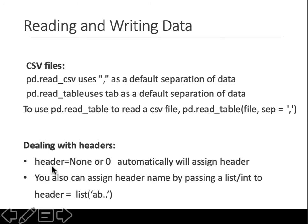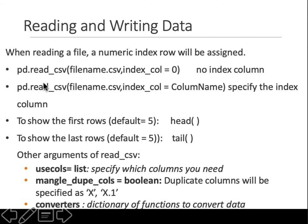You can also specify options like header=None or header=0 to control whether to read the header row. Using index_col=0 specifies there is no separate index column. Once loaded into a variable, use variable.head() to see the first five rows by default, or variable.tail() to see the last five rows.